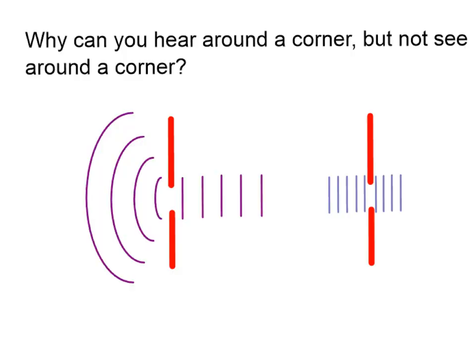Suppose you're standing in the hall at your locker and you can hear sounds from a classroom but you can't see in. Why can you hear the sound waves but not see into the classroom? That has to do with wavelengths. Sound waves have much longer wavelengths than light waves, so as sound exits through the doorway, it diffracts around the doorway and you can hear it even from beside the door. Light waves are so short that there is no diffraction at all — you can't see in until you're right at the doorway.